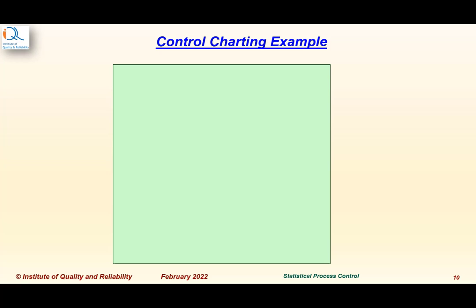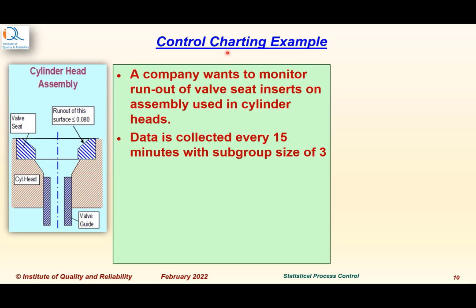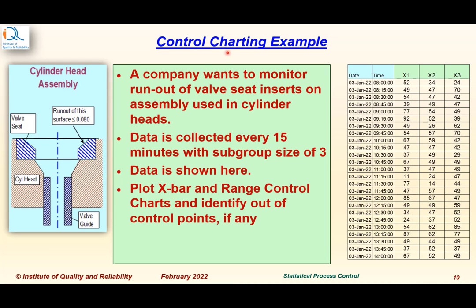Let us now see an application example of X-bar and range control charting. A company wants to monitor run-out of valve seat inserts on an assembly used in cylinder heads — a component used in diesel or IC engines. Data is collected every 15 minutes with a subgroup size of 3. The task is to plot X-bar and range control charts and identify any out-of-control points.